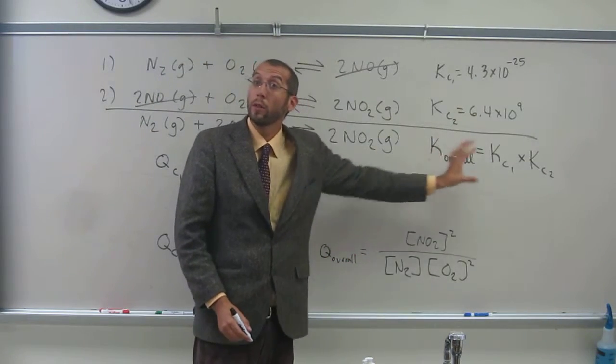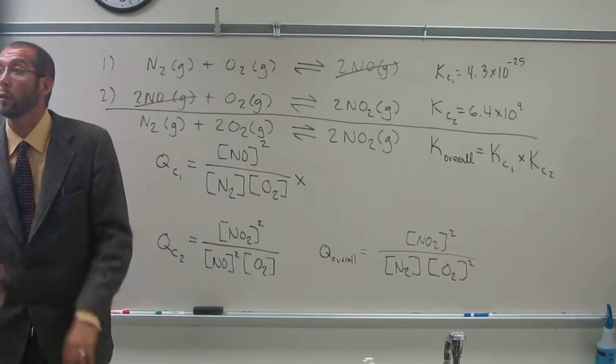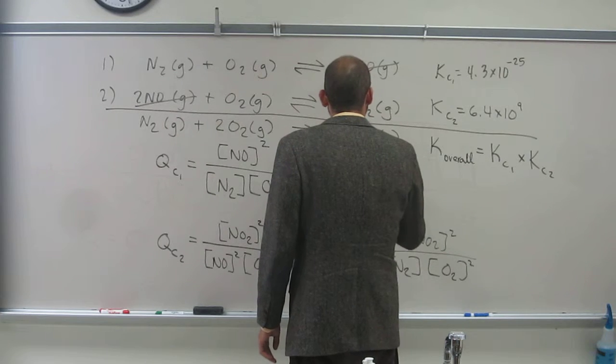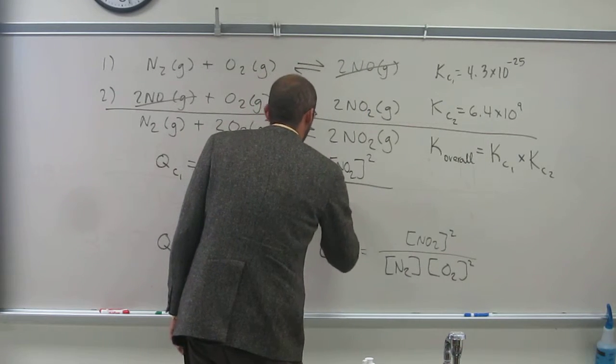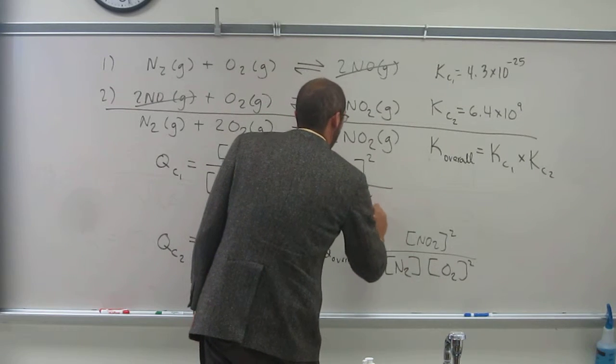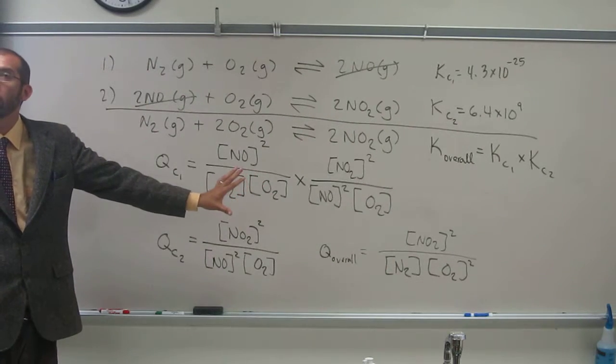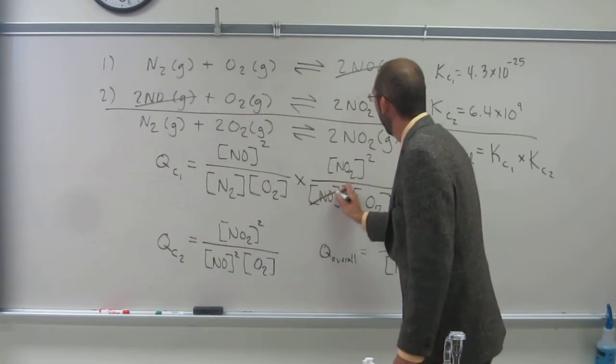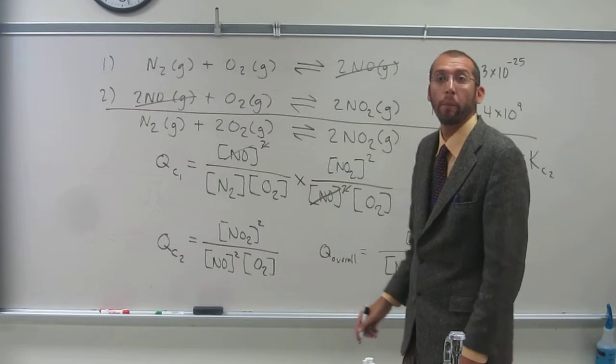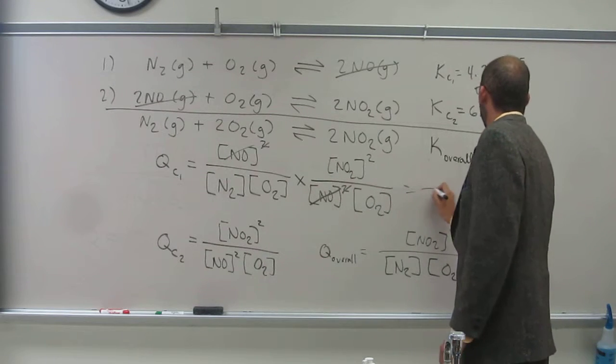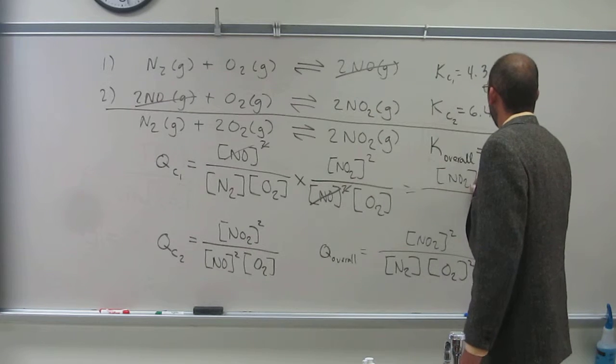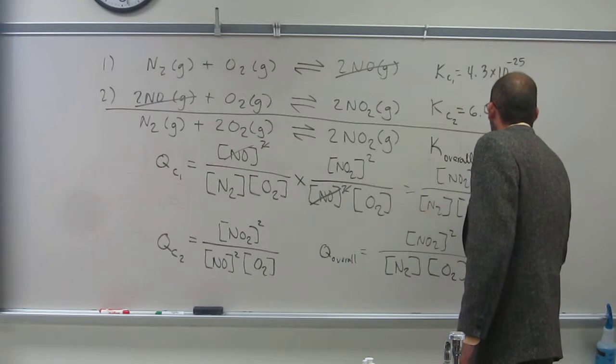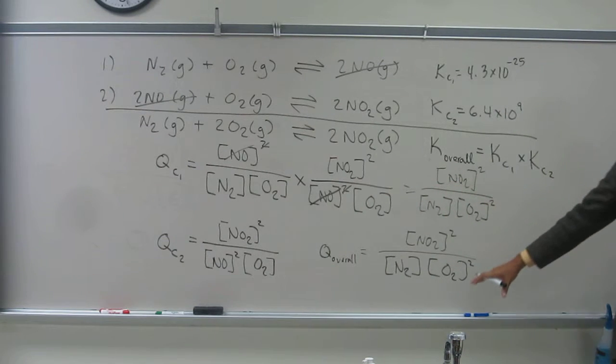Because that would be the same similar thing as doing this. So if I don't get that, then something has gone wrong. So let's do that. So if I look here, NO, NO squared, squared, like that. What do I get on the top? NO2 squared, like that. And on the bottom, N2 times O2 squared. Does everybody see that?